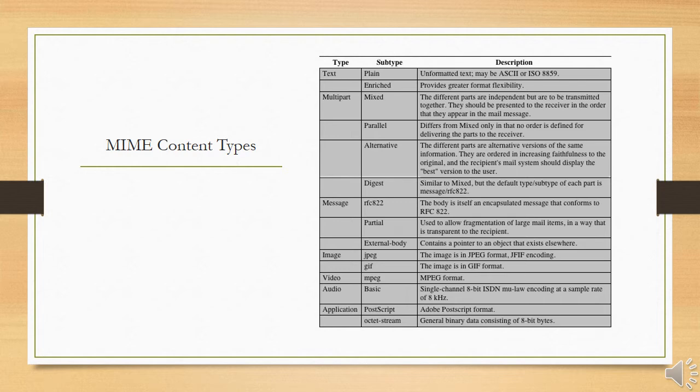The application type refers to other kinds of data, typically either uninterpreted binary data or information to be processed by a mail-based application.